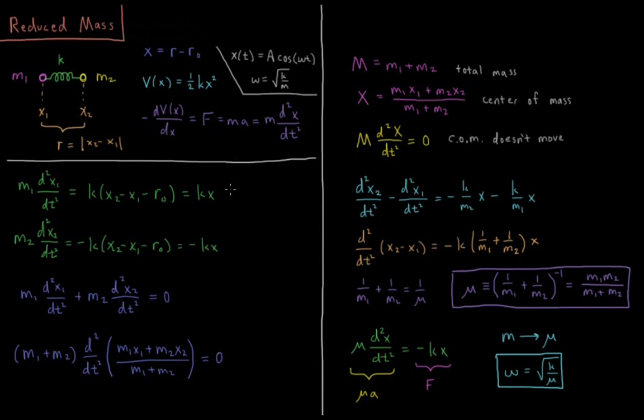The question is, in all these cases, in Newton's second law and in the angular velocity, what mass should we be using? Should it be mass 1, mass 2, or something completely different? The thing that we're going to end up using is called the reduced mass, so let's see why that is.